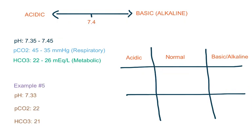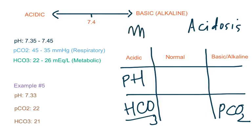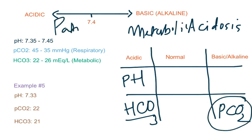Let's do another example. A pH of 7.33 means it is acidic. A pCO2 of 22 is alkaline. And a bicarb of 21 is acidic. So this is acidosis — metabolic acidosis — being partially compensated by carbon dioxide.